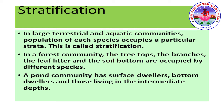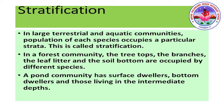In a forest community, the tree tops, branches, leaf litter, and soil bottom are occupied by different species — this is stratification. In a pond community, there are surface dwellers, bottom dwellers, and those living at intermediate depths. The next characteristic is dominance: in any community, one or a few species dominate either in number, physical characteristics, or both. In a grassland, grass is the dominant species; in a pine forest, the pine tree is dominant.